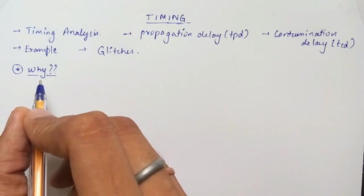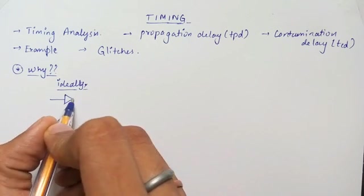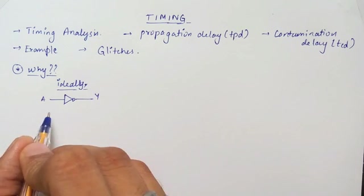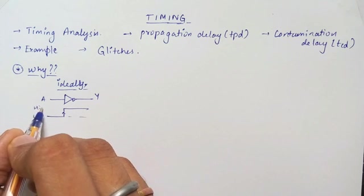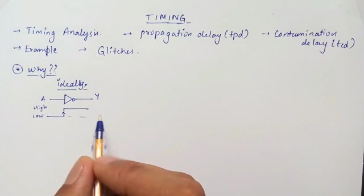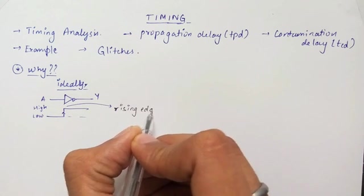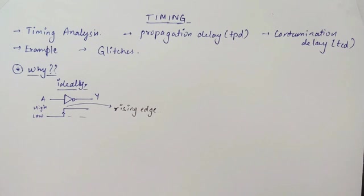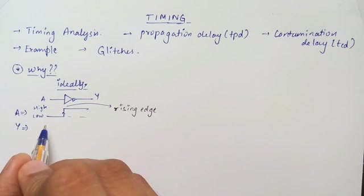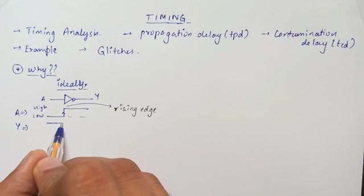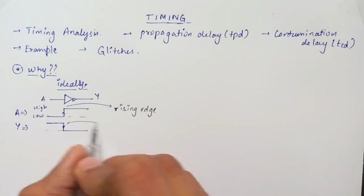Let's see it through an example. Let us have an ideal inverter with input A and output Y. Now consider the case when input A changes from low to high. When a signal transitions from low to high, the edge is called a rising edge. For a transition from low to high at the input of the inverter, the output Y transitions from high to low. As this is an ideal inverter, the output transitions instantaneously. The edge when the output falls from high to low is called a falling edge.